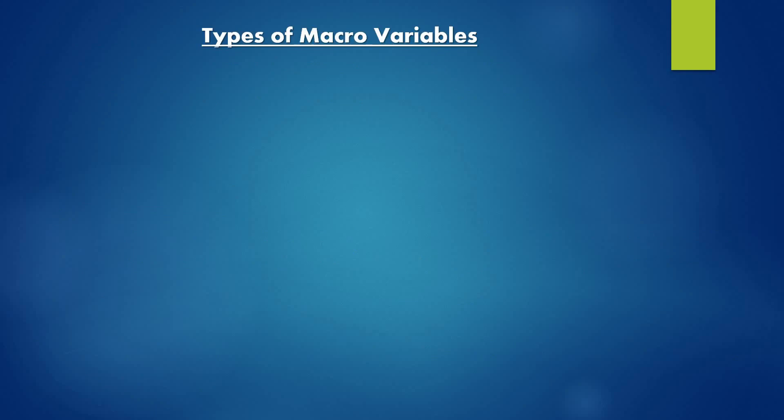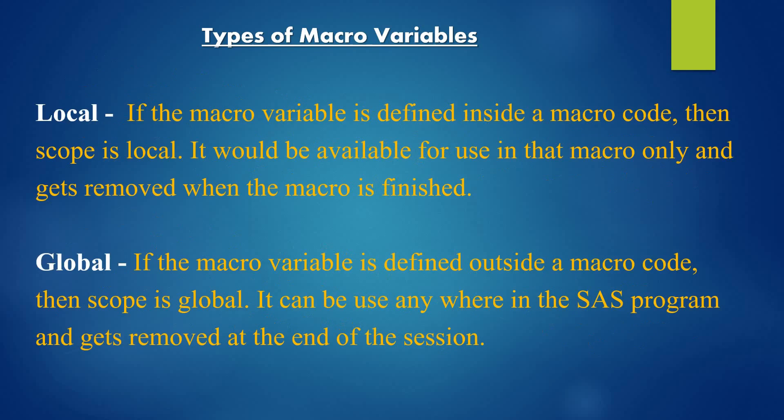Now let's see the types of macro variables. There are two types: one is a local macro variable and the second is a global macro variable. If the macro variable is defined inside a macro code, then the scope is local — it would be available for use in that macro only and gets removed when the macro is finished.